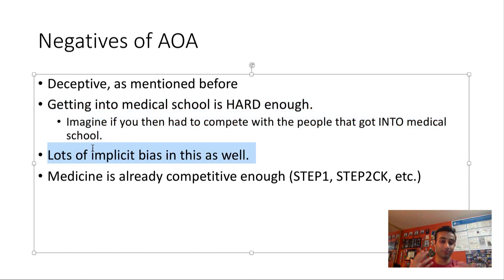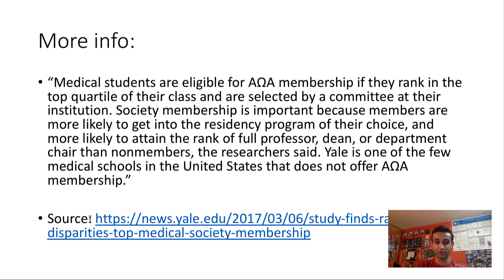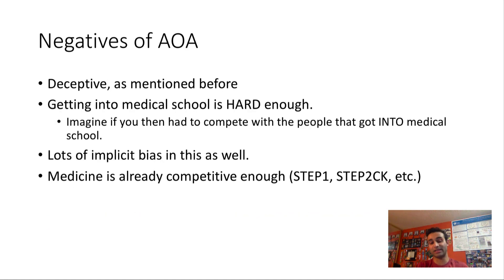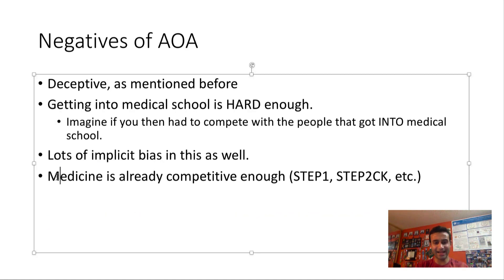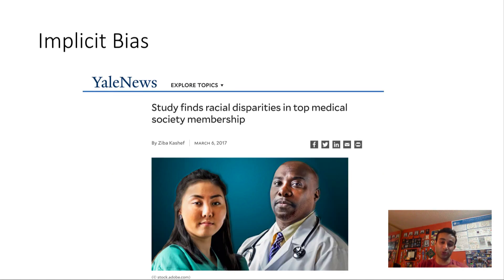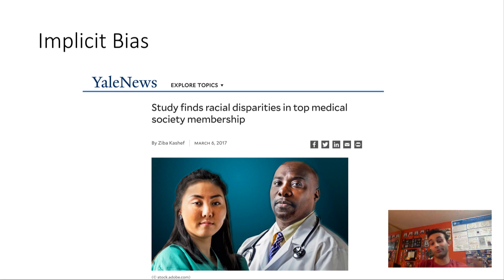There are also lots of implicit biases in AOA. There are studies that have shown membership into AOA prefers certain aspects of race and gender, so it's not always as objective as we think. That's one of the negatives. There's already enough competition in medicine — Step 1 is eight hours, Step 2 is nine hours, Step 2 CS is really long. AOA is just adding another hoop to jump through. This article about implicit bias shows there are racial disparities, and it's important that we understand that as a negative aspect of the society, especially in today's times.